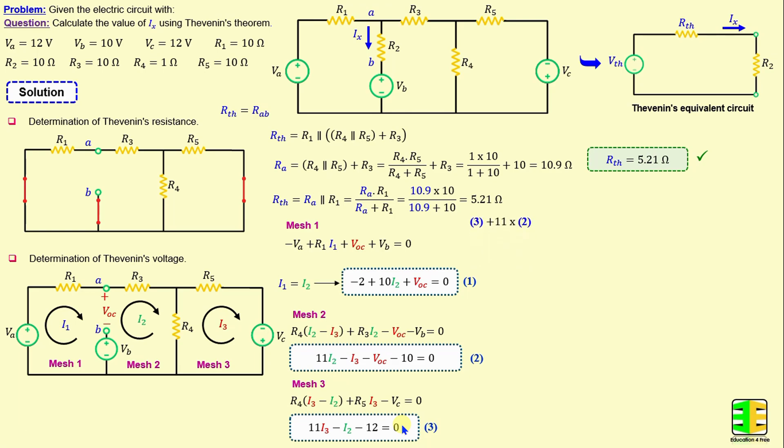Now, by performing equation 3 plus 11 times equation 2, we obtain 120 times I2 minus 11 times VOC minus 122 equals 0. And now, by performing equation 4 minus 12 times equation 1, we derive one equation in terms of VOC. That means VOC is equal to negative 98 over 23, which gives us negative 4.26 volts.